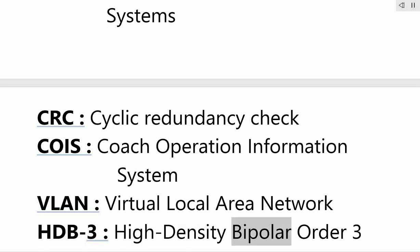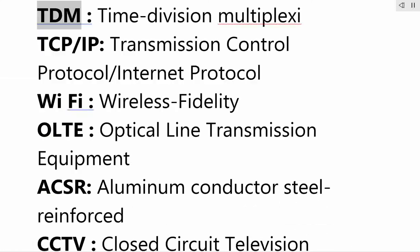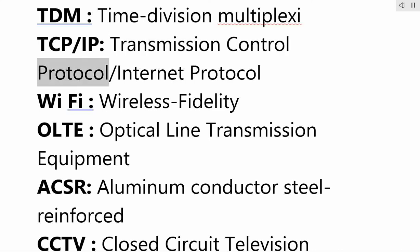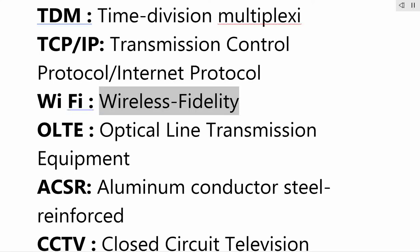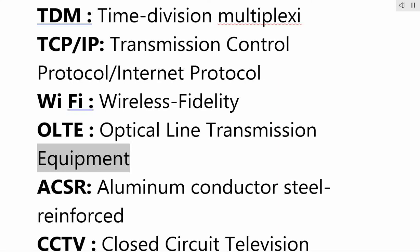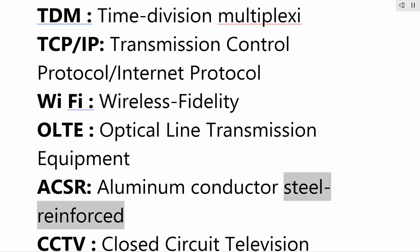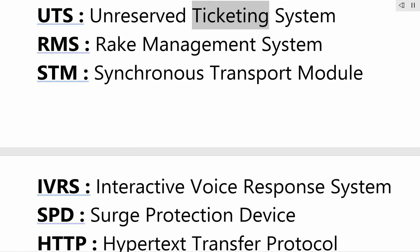high density bipolar order 3; TDM — time division multiplexing; TCP/IP — transmission control protocol slash internet protocol; Wi-Fi — wireless fidelity; OLTE — optical line transmission equipment; ACSR — aluminum conductor steel reinforced; CCTV — closed circuit television; UTS — unreserved ticketing system.